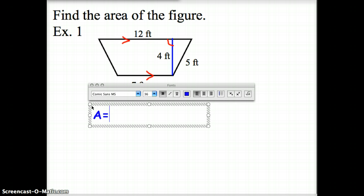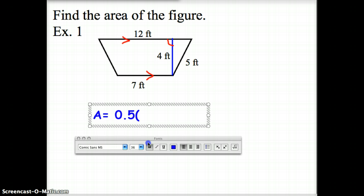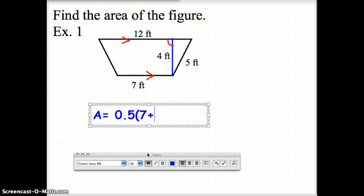So for this problem, our area is half, which I'm going to go ahead and write as 5 tenths. The sum of the bases, so I'm going to take 7 plus 12 times the height, which is 5.